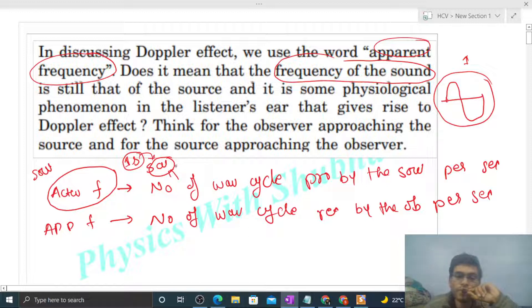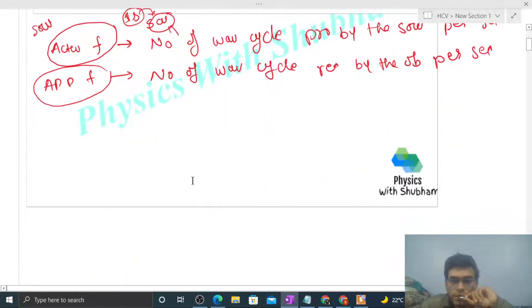Now apparent frequency depends on the relative motion between the source and observer. How many wave cycles the observer receives in one second depends on the relative motion between the observer and the source. Let me take an example.